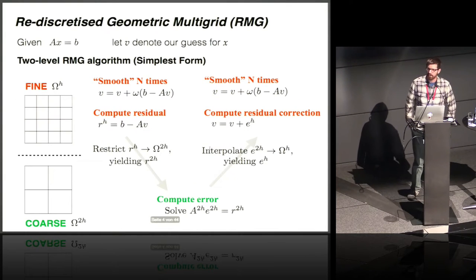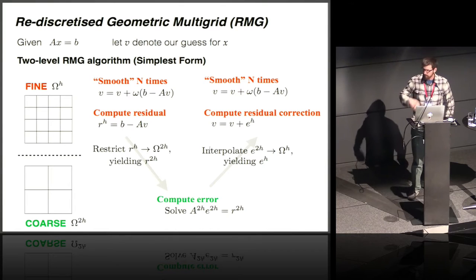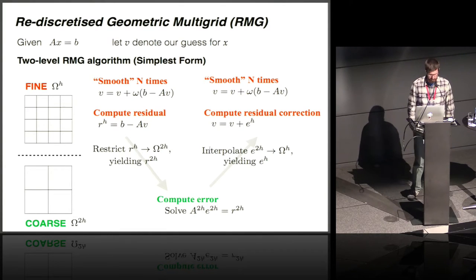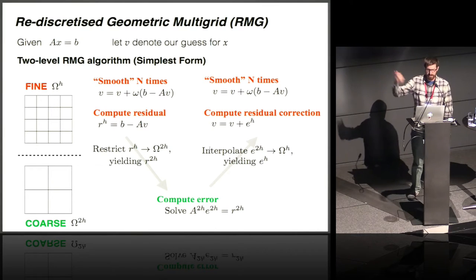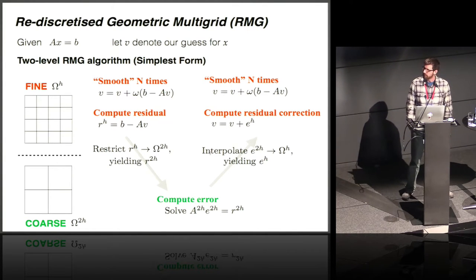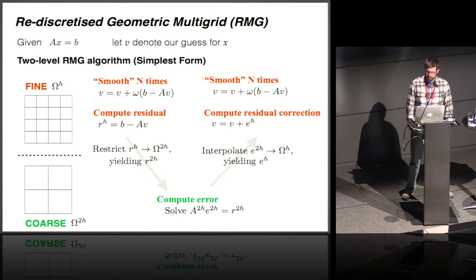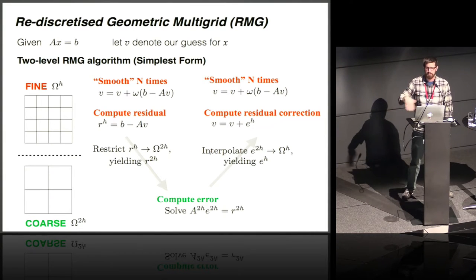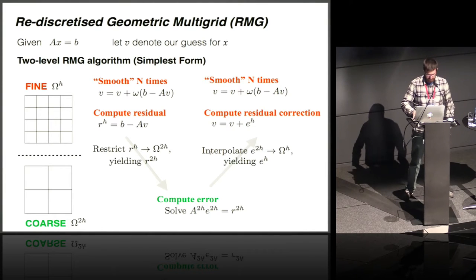We'll start with some background on why we need a component such as PC Telescope. This is the simplest form of geometric multigrid. We have a linear system to solve. We smooth by applying Richardson iteration with a damping factor omega, compute a residual, restrict it to a coarser grid, solve it exactly, interpolate it back to the fine grid, smooth again, and repeat. The coarse grid solve can be replaced with recursive multigrid solves to introduce an n-level method.